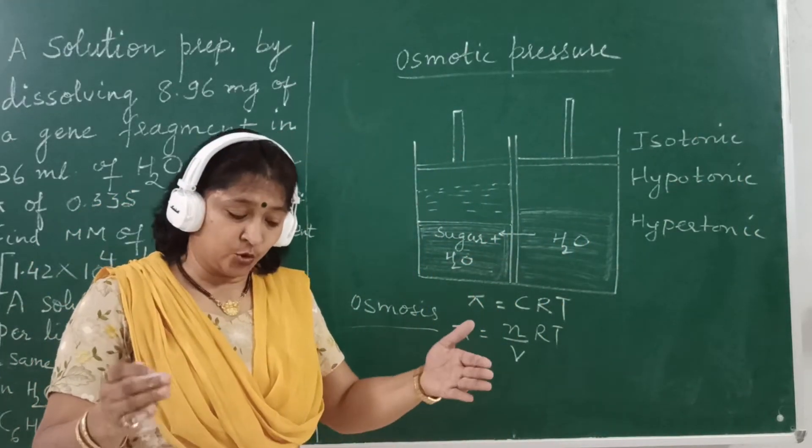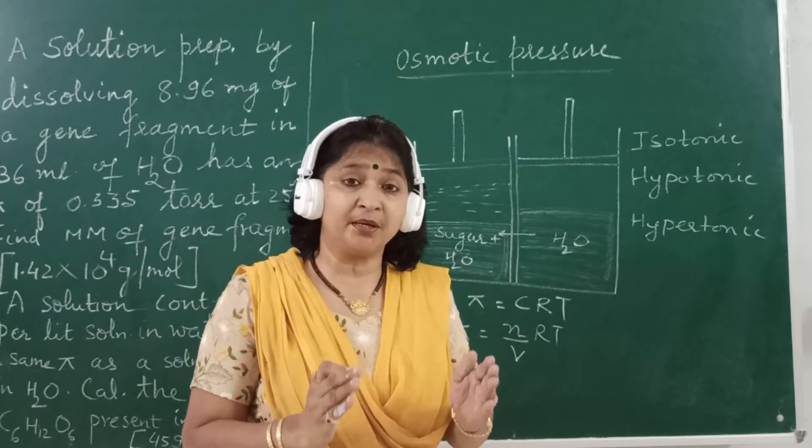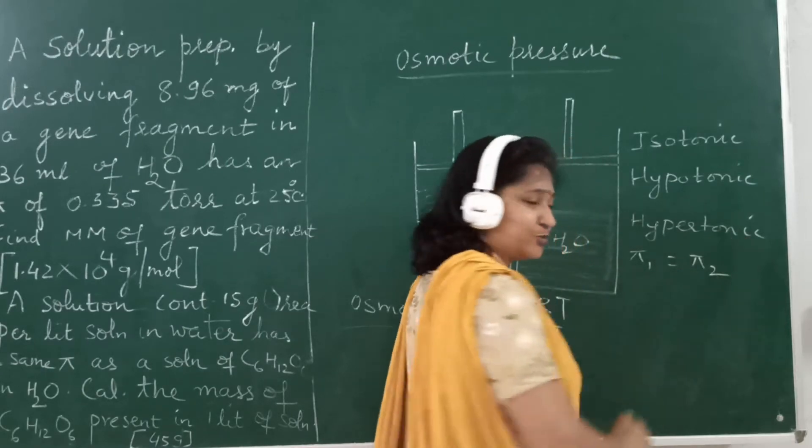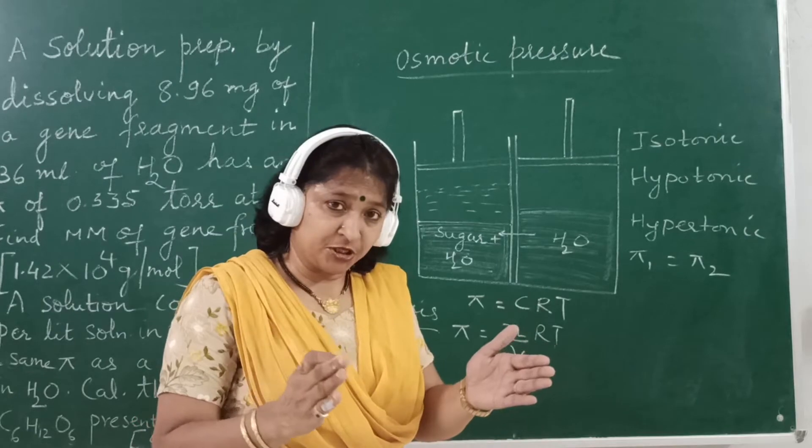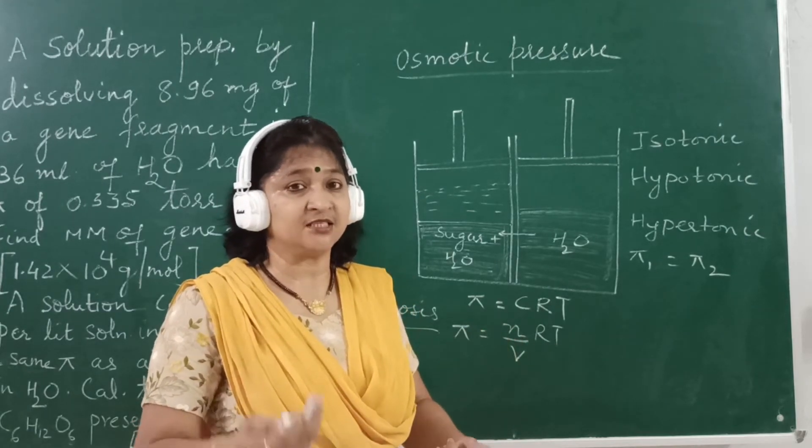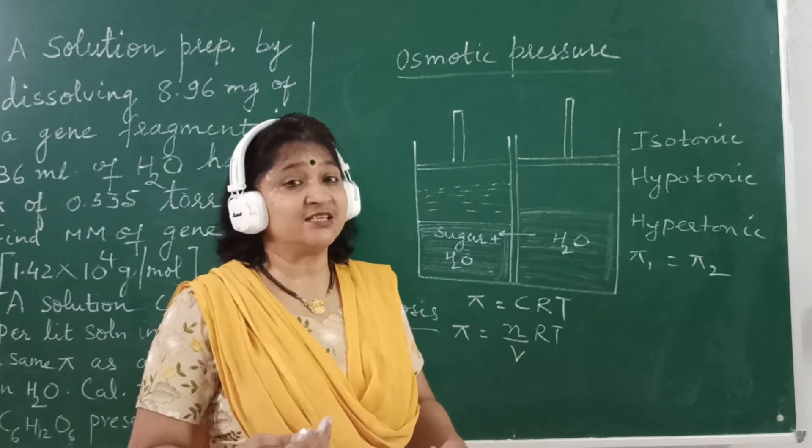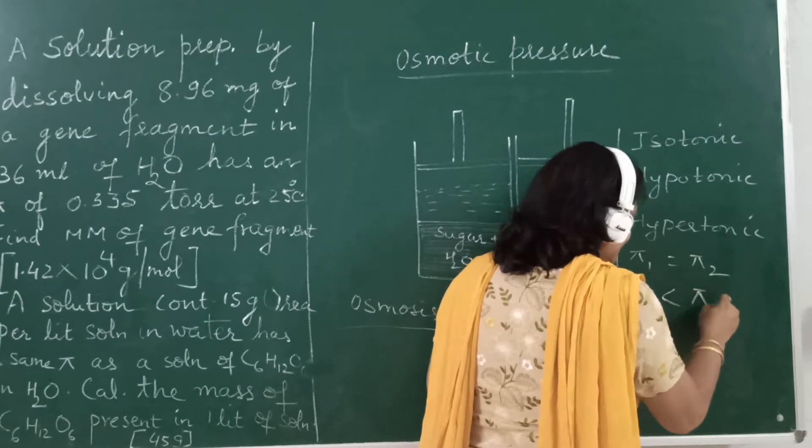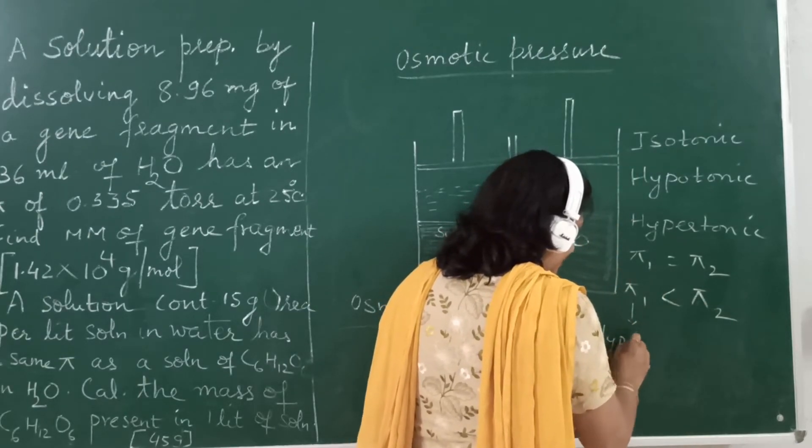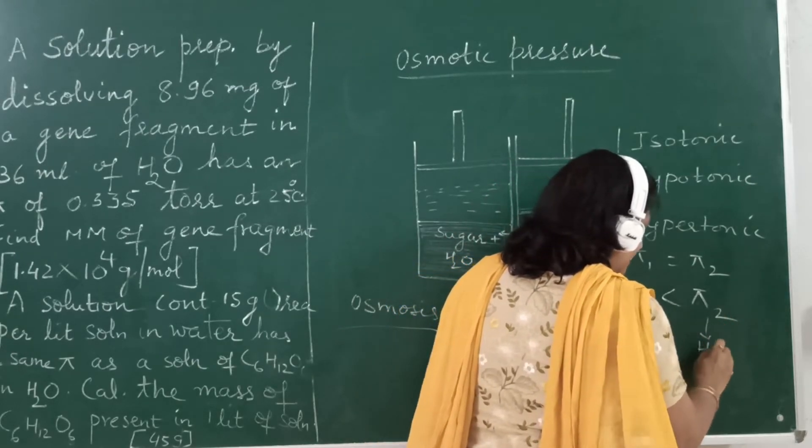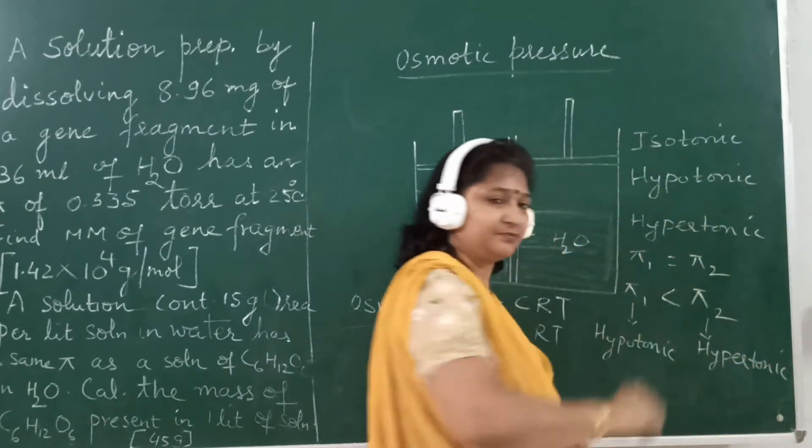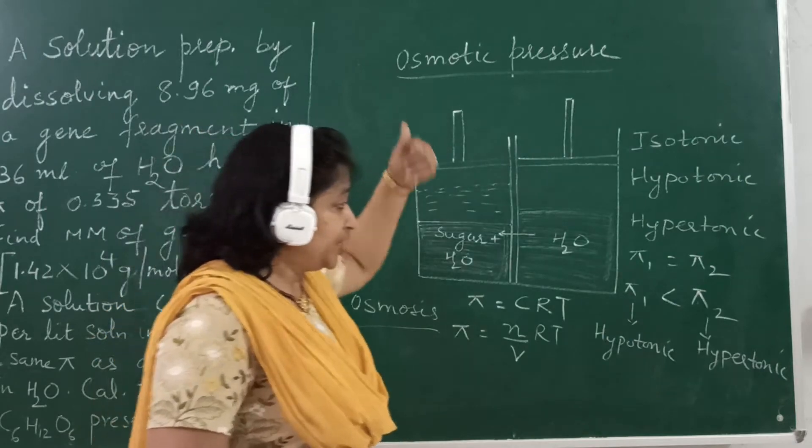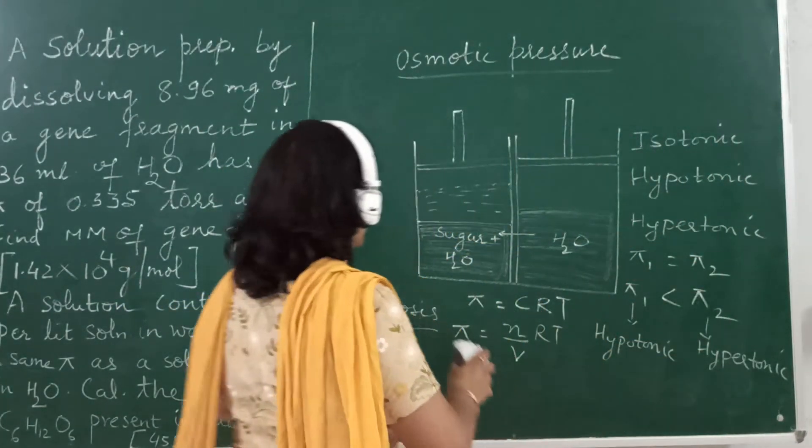So if you see that osmotic pressure is the pressure required to stop the phenomena of osmosis, and pi is equal to C R T. Now osmotic pressure related questions, how do we solve the problem? We have taken the problem.